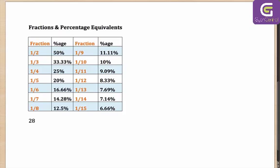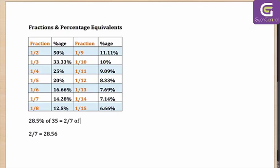Let me take a rough example. Let's say you have to calculate 28.5% of 35. Now this looks like a difficult calculation. But if you know that one-seventh is 14.28, then two-sevenths will be roughly 28.56, and 28.56 is terribly close to 28.5%. Which means instead of calculating 28.5% of 35, you can simply calculate 2/7 of 35, which comes out as 10.